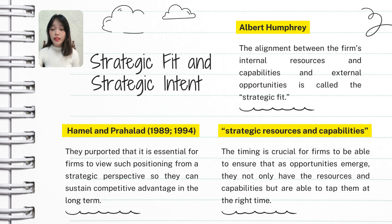When a company's strengths align well with what the market needs or offers, it is better positioned to succeed. For example, a hotel with great customer service and a strong online booking system — if there is a growing demand for eco-friendly travel, the hotel can use its existing strengths to offer sustainable options like green certifications or eco-friendly amenities. Strategic Fit is important because it allows companies to use their strengths to take advantage of new opportunities and avoid wasting resources on things that don't align with their core abilities.